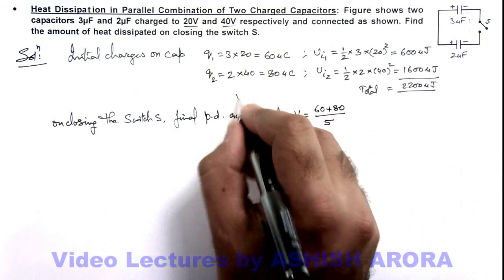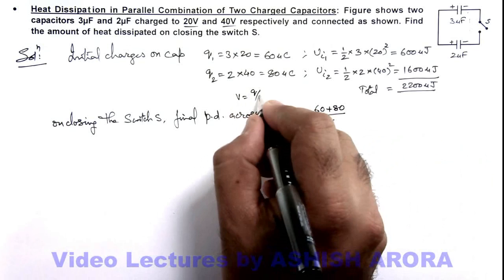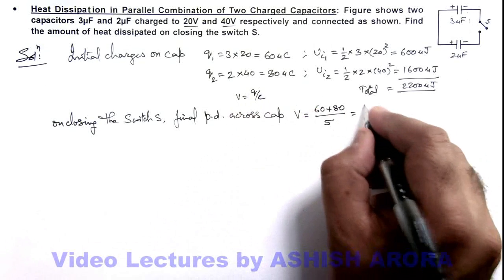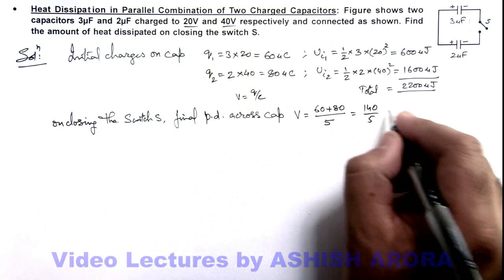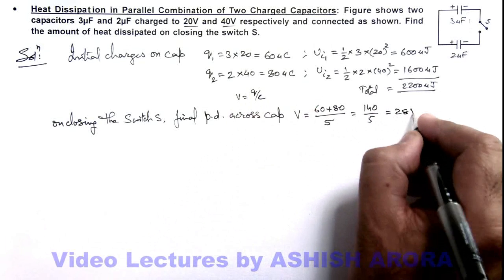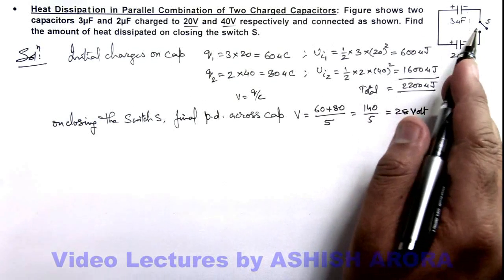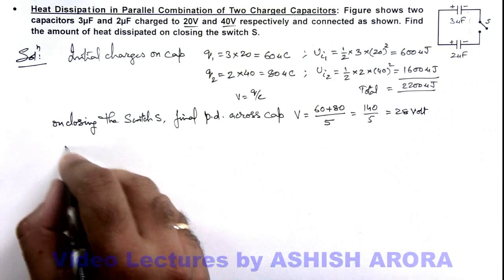In parallel, the capacitance is 5 microfarads. We know the potential difference can be written as Q/C, so charge is 140, capacitance is 5, thus this equals 28 volts. That is the potential difference across the two after connection.